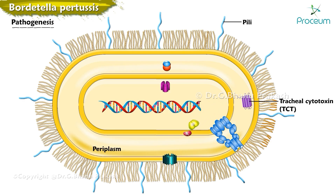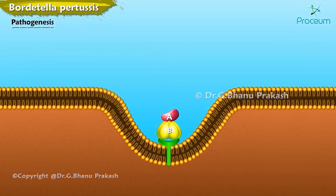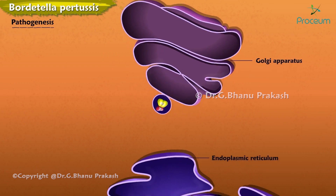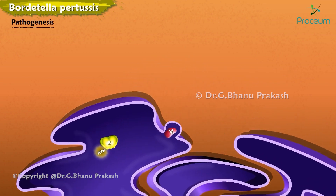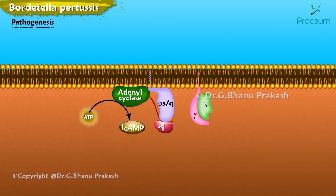Pertussis toxin is assembled in the bacterial periplasm and exported by a type 4 secretion system. Following binding to a sialoglycoprotein host cell receptor, pertussis toxin is endocytosed and trafficked to the Golgi apparatus and endoplasmic reticulum. In the endoplasmic reticulum, the B pentamer binds to ATP and dissociates from the A subunit. The A subunit is then transported into the cytoplasm and ADP-ribosylates the alpha subunit of heterotrimeric G proteins. This modification alters the ability of G proteins to regulate multiple enzymes and pathways, including their inability to inhibit cyclic AMP formation.